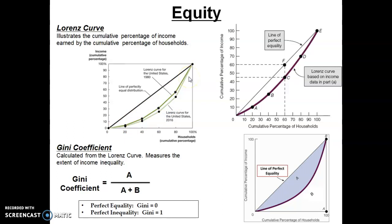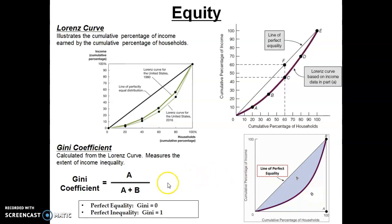Another way to identify income inequality is with the Gini coefficient — in fact, this is the most common way to quantify income inequality, and it's derived from the Lorenz curve. The Lorenz curve deviates from the line of perfect equality; let's call that deviation area A. The remaining area under the right triangle is area B. We can create a formula that quantifies area A as a fraction of area A and B — A over A plus B.